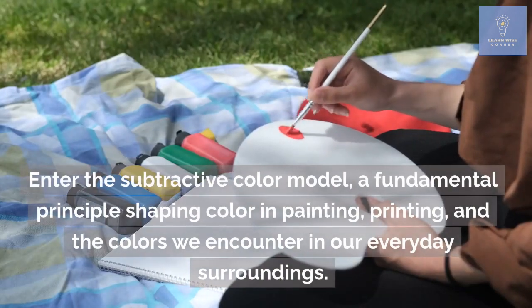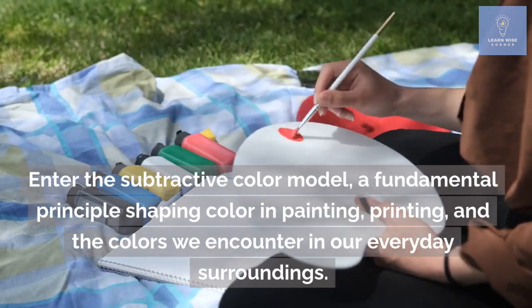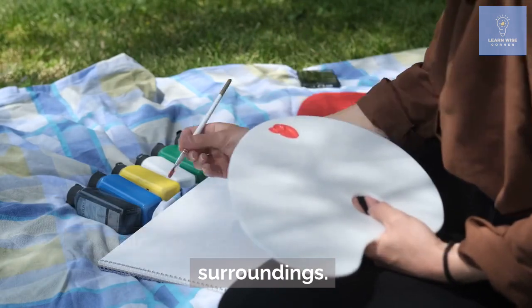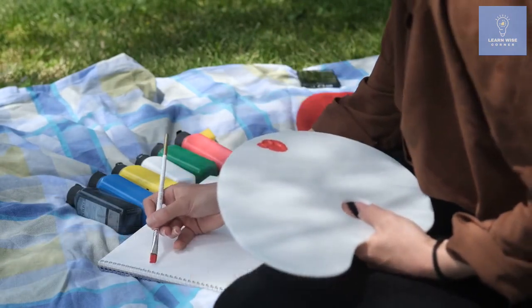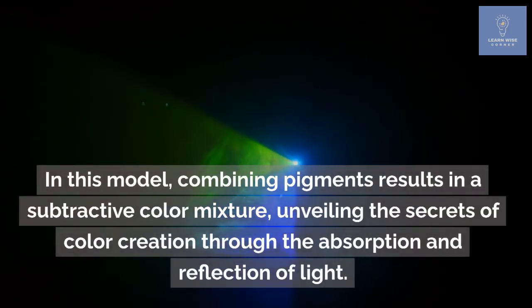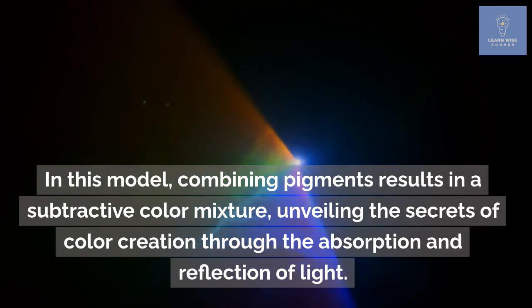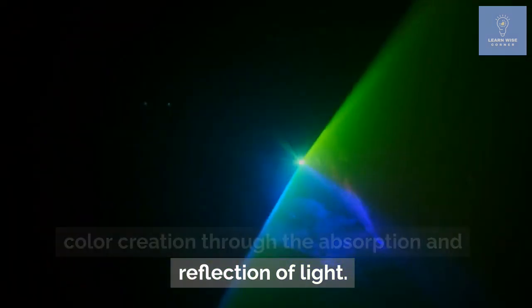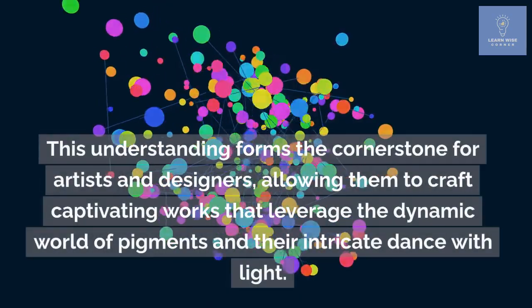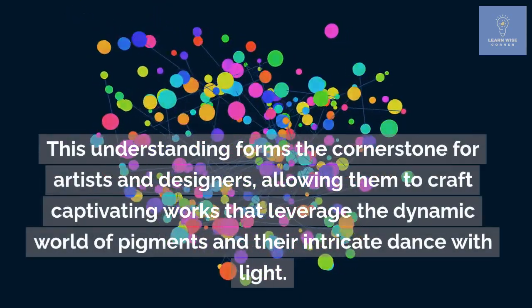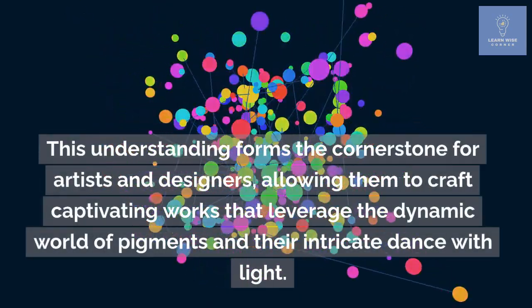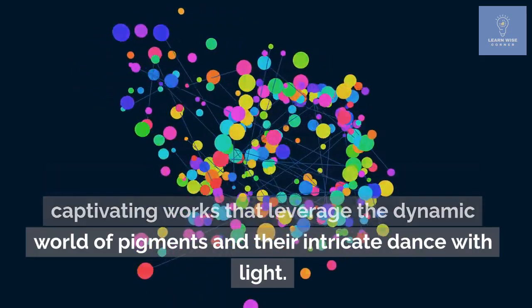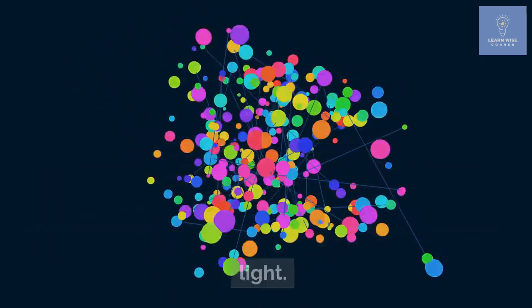Enter the subtractive color model, a fundamental principle shaping color in painting, printing, and the colors we encounter in our everyday surroundings. In this model, combining pigments results in a subtractive color mixture, unveiling the secrets of color creation through the absorption and reflection of light. This understanding forms the cornerstone for artists and designers, allowing them to craft captivating works that leverage the dynamic world of pigments and their intricate dance with light.